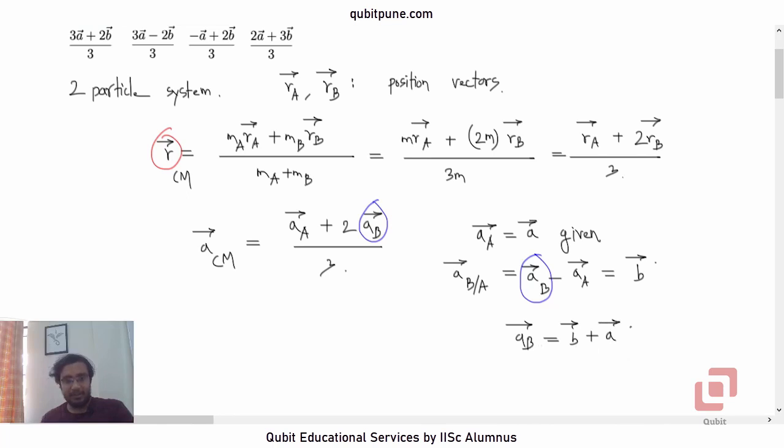We will make that replacement now in the problem. Acceleration of a bar is a bar. So it will be a bar plus 2 times b bar plus a bar divided by 3.